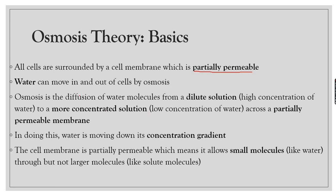This definition must be written word for word in your IGCSE exam. In osmosis, water is moving down its concentration gradient. A concentration gradient means that on one side there is a high concentration of water molecules compared to the other side, which has a low concentration of water molecules.